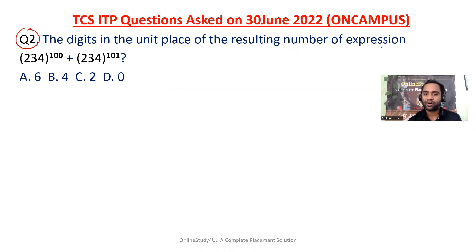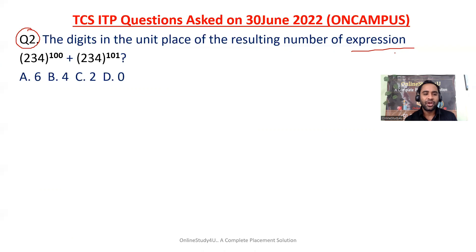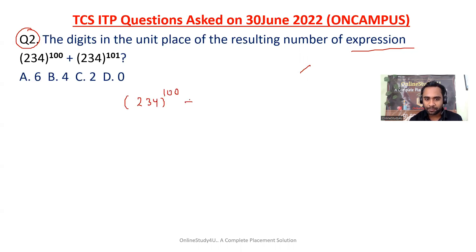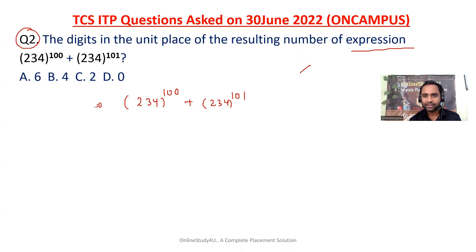The question asks for the digit in the unit place of the expression 234^100 + 234^101. When we see this question we might think it is complex, but if you know the concept it will not even take 30 seconds. The key is the unit digit, which is 4.